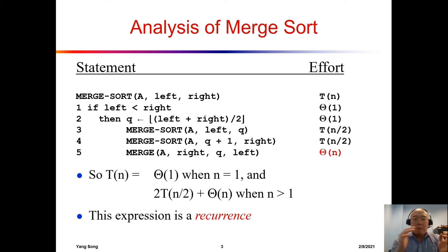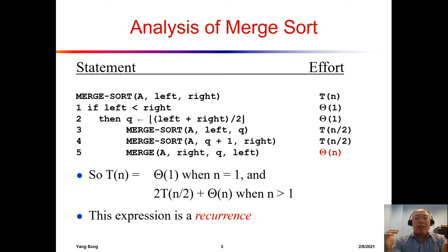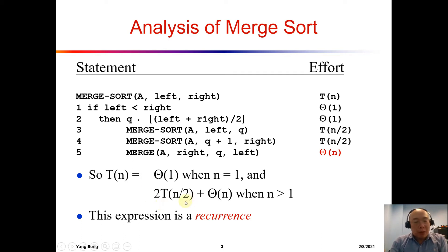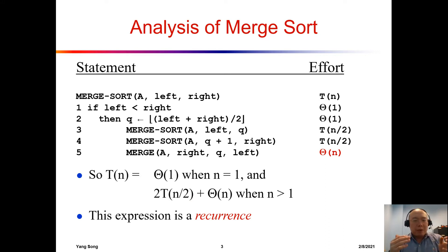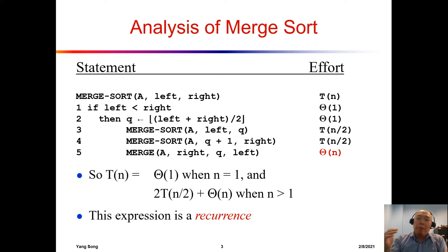For the analysis of merge sort, to get T(n) — the estimate of how many primitive steps we need to execute — we have a T(n/2) term. To find T(n), we have to figure out T(n/2). Because this is a recursive algorithm, we end up with a recursive T(n), which is not what we really want. We want T(n) to be a polynomial of n.